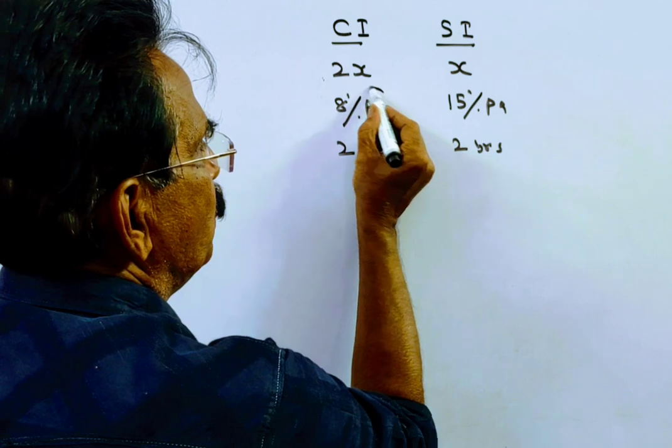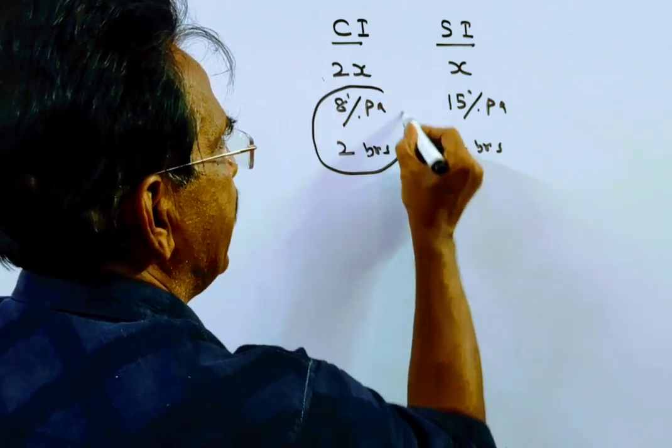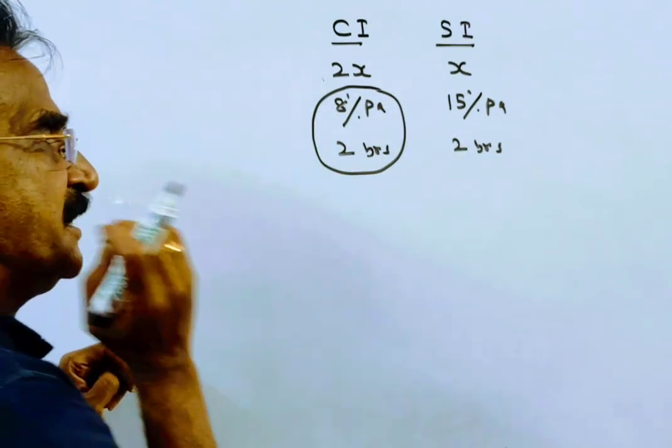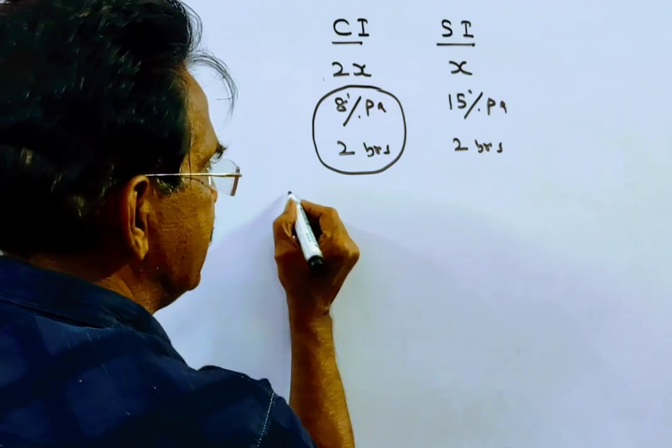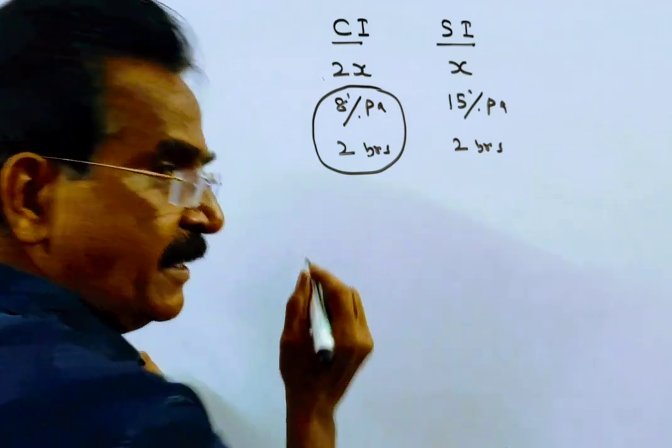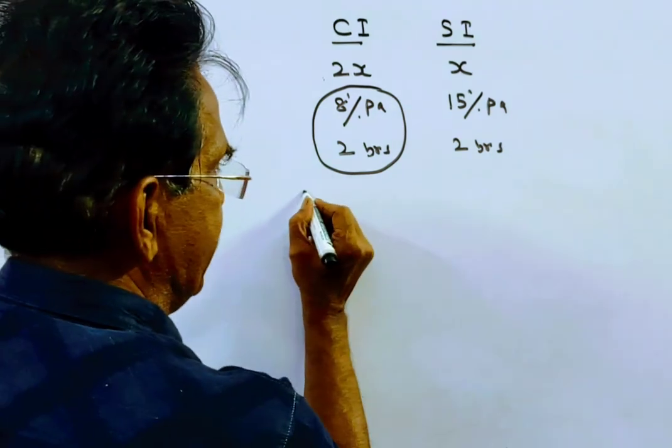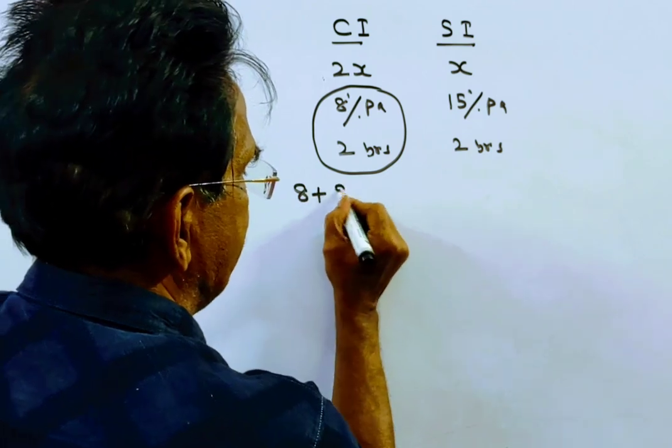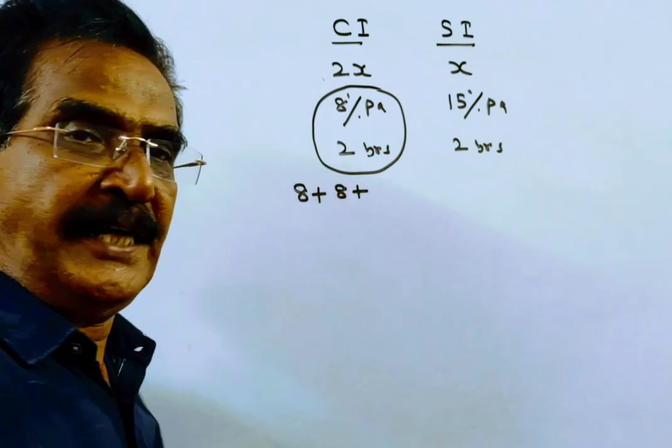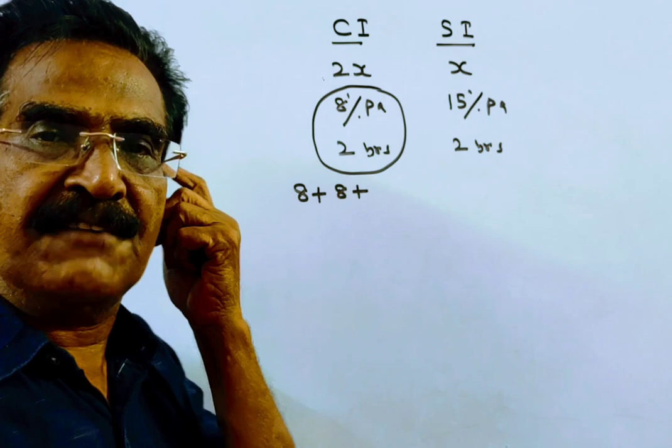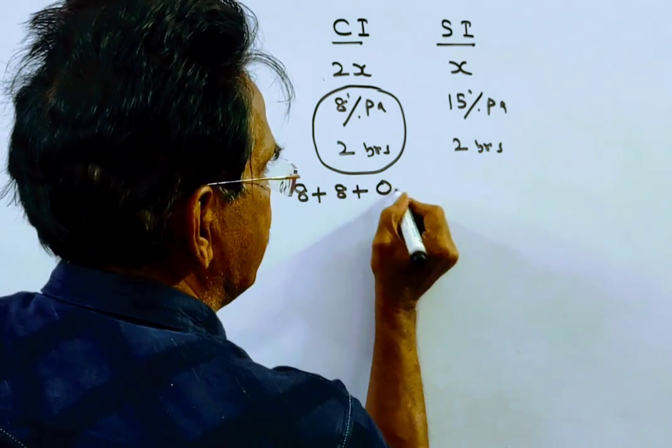8% per annum for 2 years compound interest - the effective rate for 2 years is 8 plus 8 plus 8 into 8 by 100. So 64 by 100, that is 0.64.